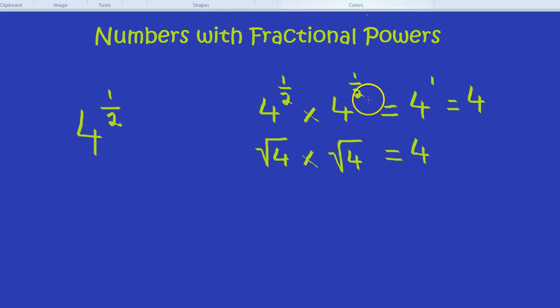Using the same trick, we can see that something like 27 to the power of a third is going to be the cube root of 27. Because if we multiplied that by itself 3 times, you would get a third plus a third plus a third, which is 1. 3 thirds, which is 1.